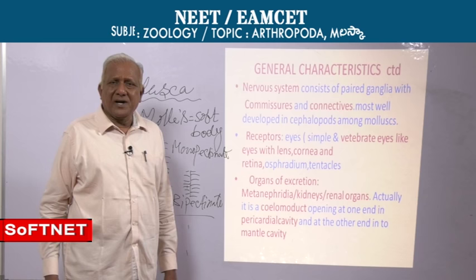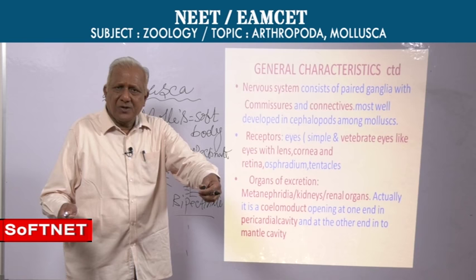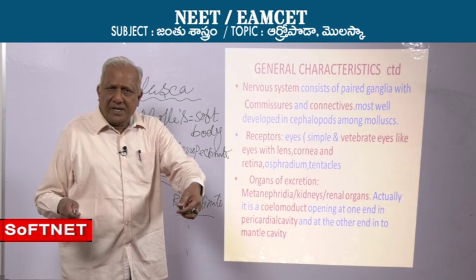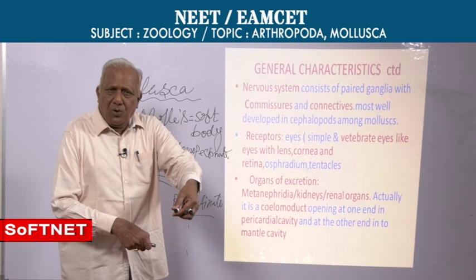For example, the nerve joining two cerebral ganglia is called a cerebral commissure. The nerve joining the cerebral and pedal ganglion is called the cerebro-pedal connective, as the two ganglia are different.